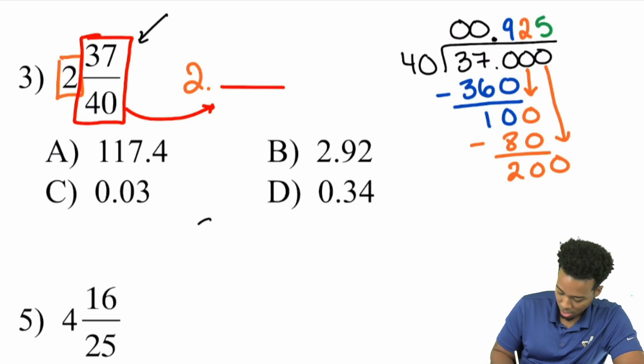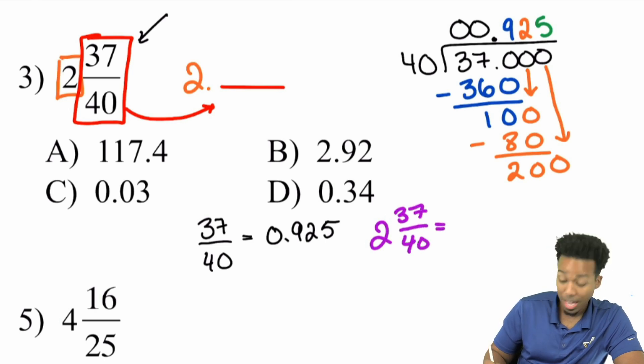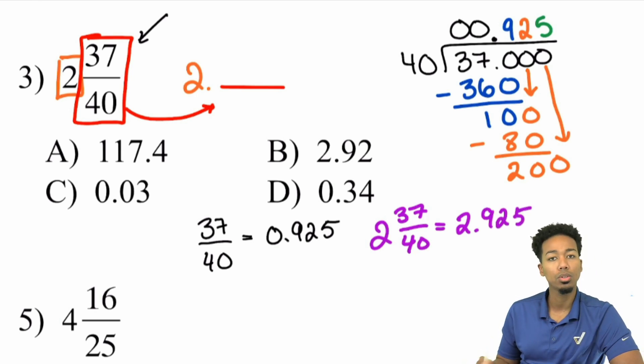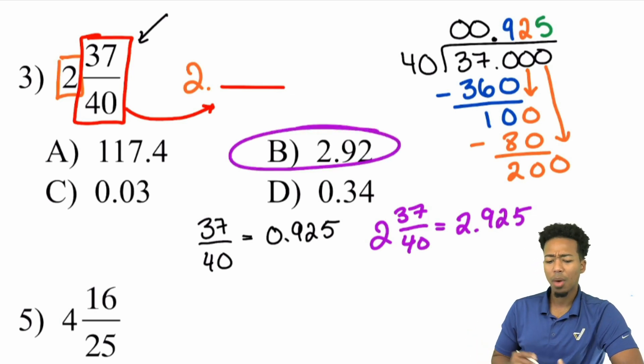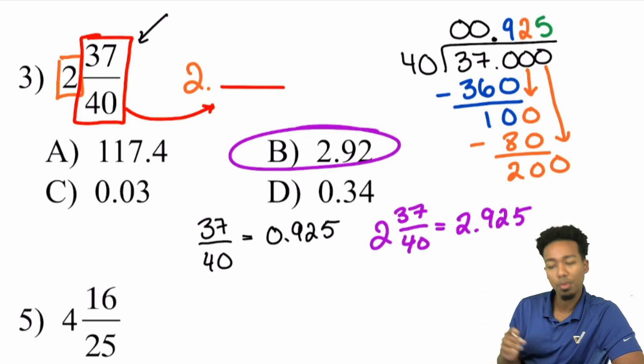And so we end up having here, that'll be five. And there we have it. So with that said, booyah, we're good. And so we have 0.925 over there. So over here, this 37 over 40 is 0.925. But since we have 2 and 37 over 40, that'll be the same thing as 2.925. And in this case, we were told that we're going to round to the nearest hundredth. So the nearest one is right here, B, 2.92.